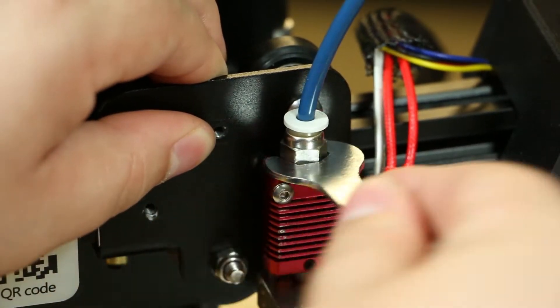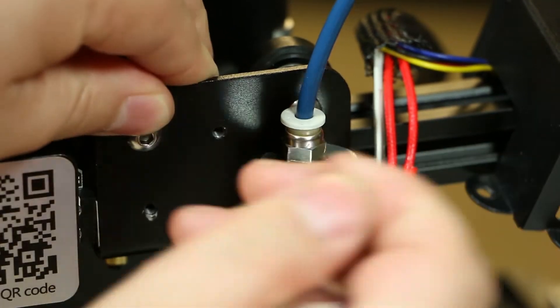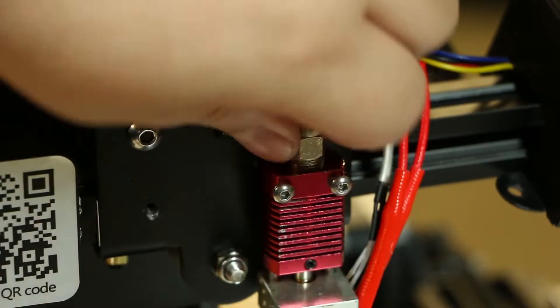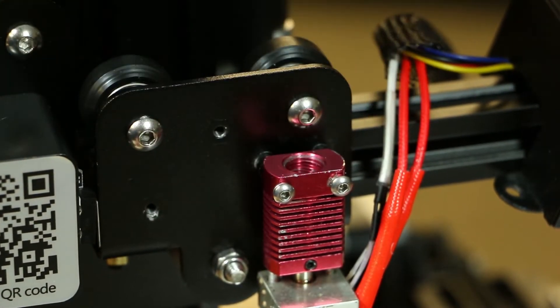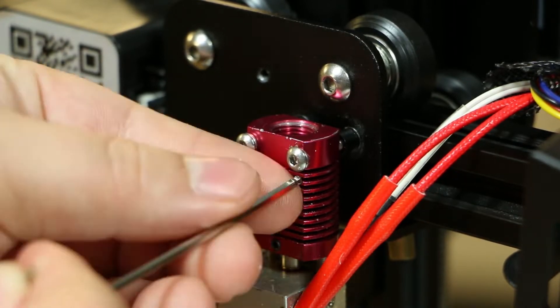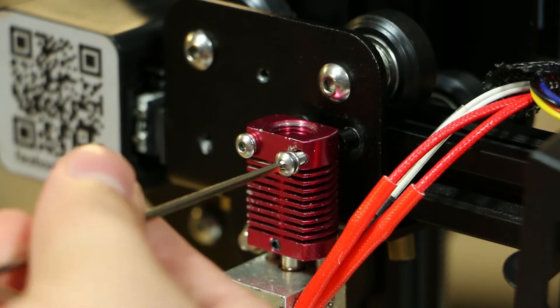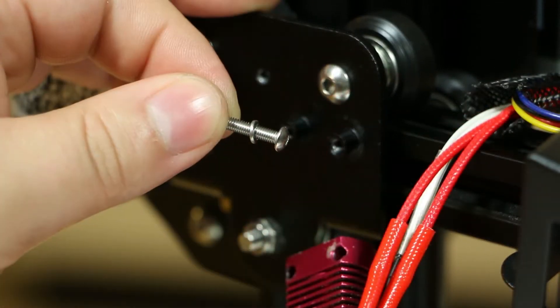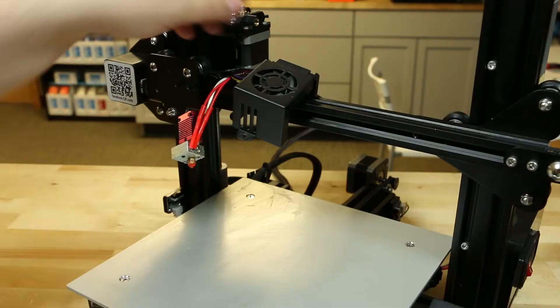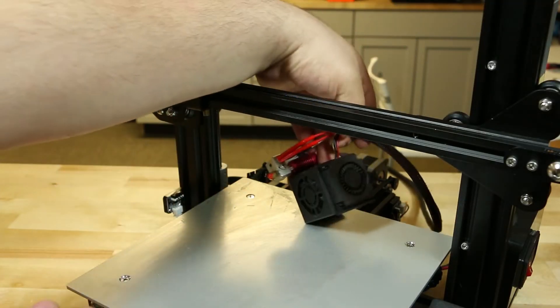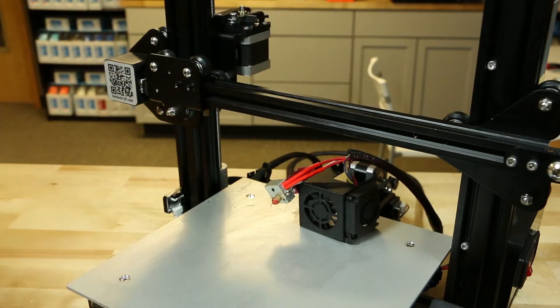Next, with your wrench, remove the bowden connector from the hot end. This may take some force, so be careful. Once the bowden coupler is removed, use the 1.5 millimeter allen wrench to remove the screws. Make sure to keep the screws and washers from the hot end as we will be using them later. Make sure to place your hot end and fan shroud somewhere out of the way, behind the printer works well, while working with the extruder.